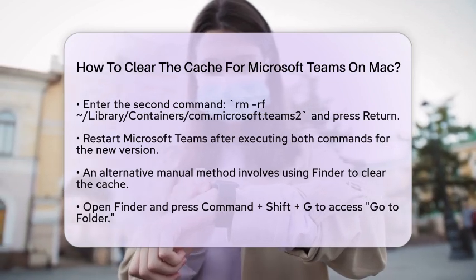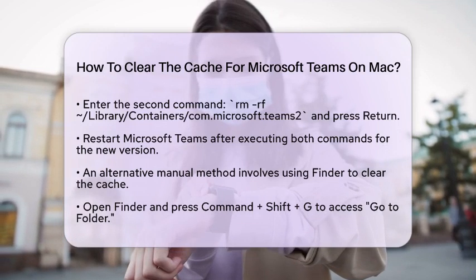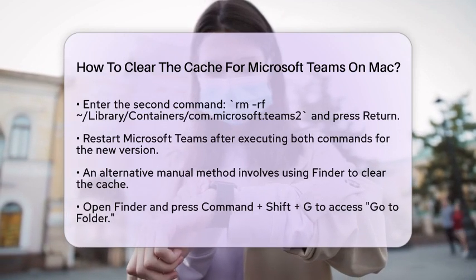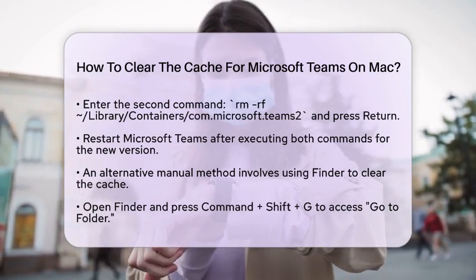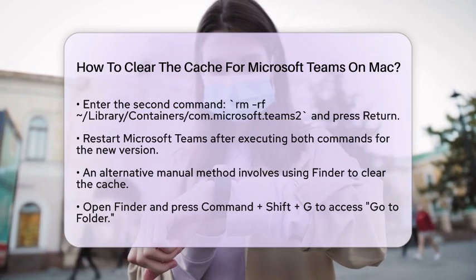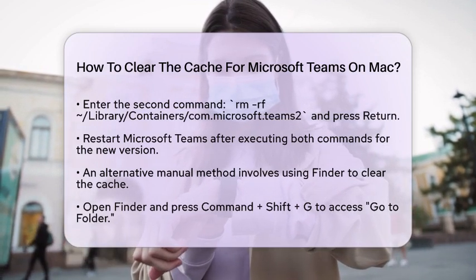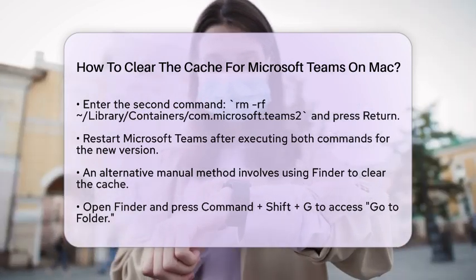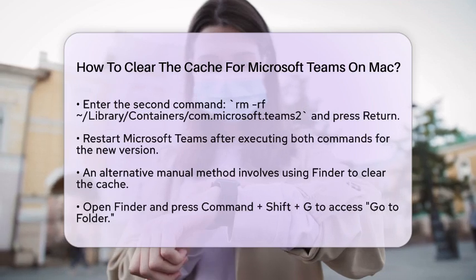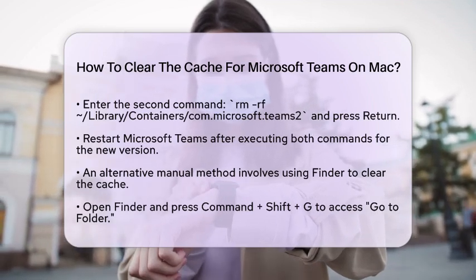If you prefer not to use Terminal, there is a manual method to clear the cache. Start by opening Finder and clicking on the Finder icon in your dock. Next, press Command, Shift, and G together to open the Go to Folder dialog. For the classic version, type the Applications Support Microsoft Teams path and hit Enter.